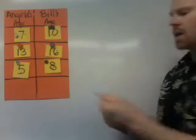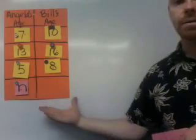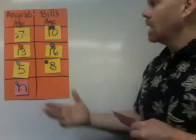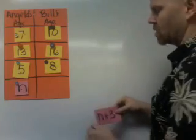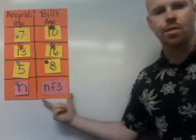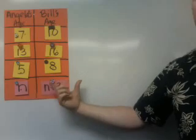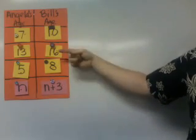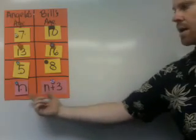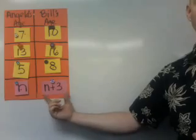Now a little sneaky thing is: what if we don't know Angela's age? What if Angela is n years old? How old will Bill be? Well, we know that Bill is always three years older than Angela, so Bill's age is n plus three. This is called a variable expression because we don't know Bill's specific age — like eight, sixteen, or ten. We just know he is going to be three years older than Angela, so if Angela is n, then Bill has to be n plus three.